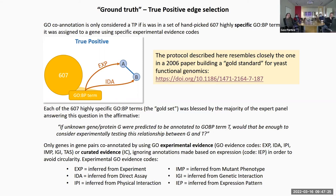Now the problem is how reliable those other evidence codes are. For example, EXP — 'inferred from experiment' — I'm not sure exactly how well regulated and controlled all these submissions of GO assignments are. Is there a committee reviewing GO? I guess the Gene Ontology Consortium does that, but they're also interested in making the tree as rich as possible. So there's always a rush to classify things, and we count on the reliability of whoever submits these annotations to the gene consortium.